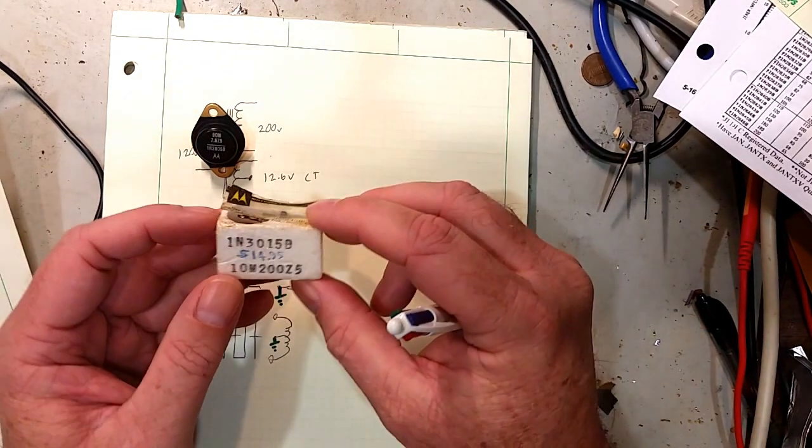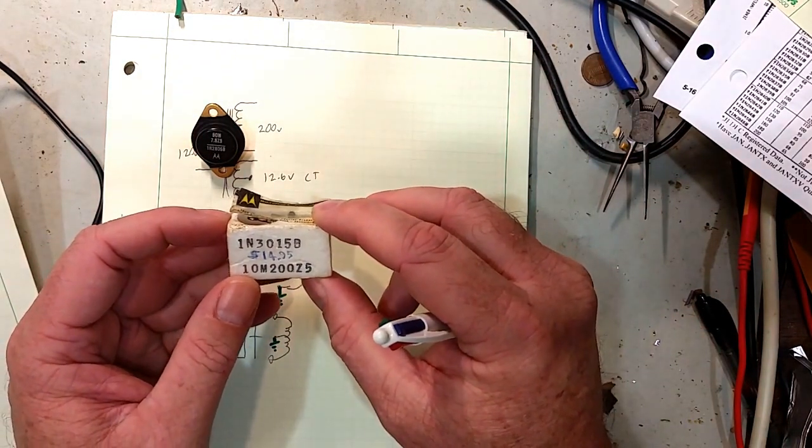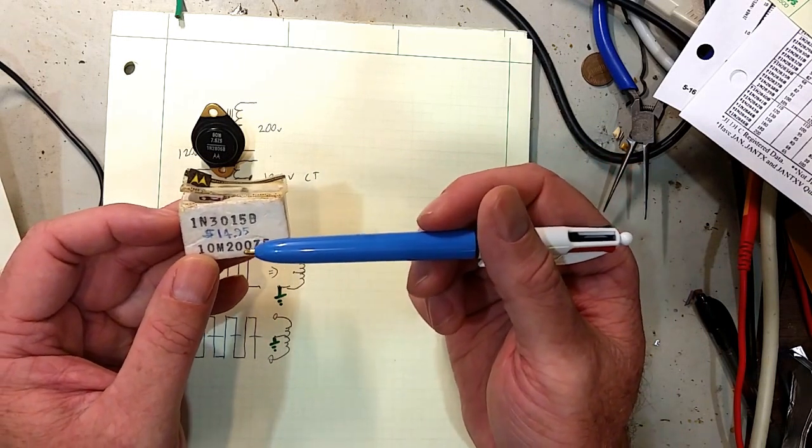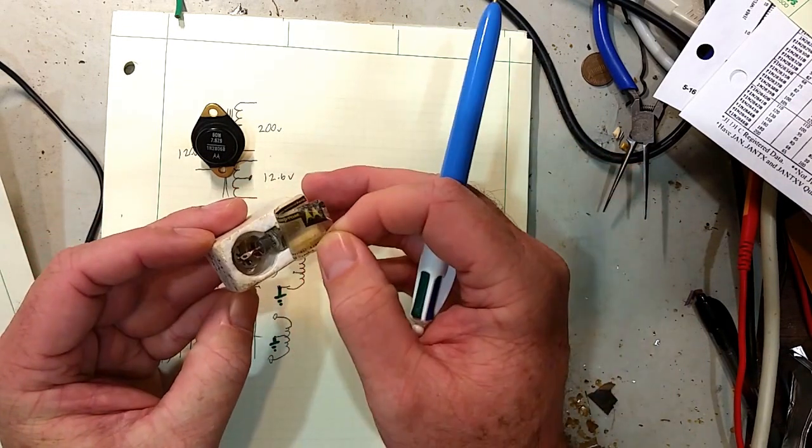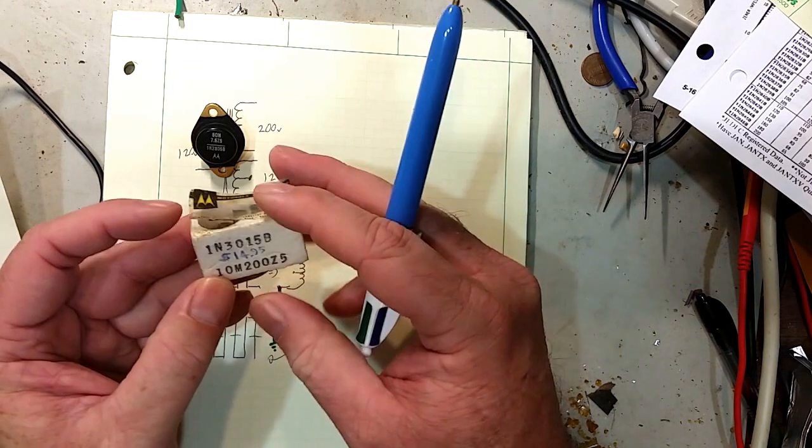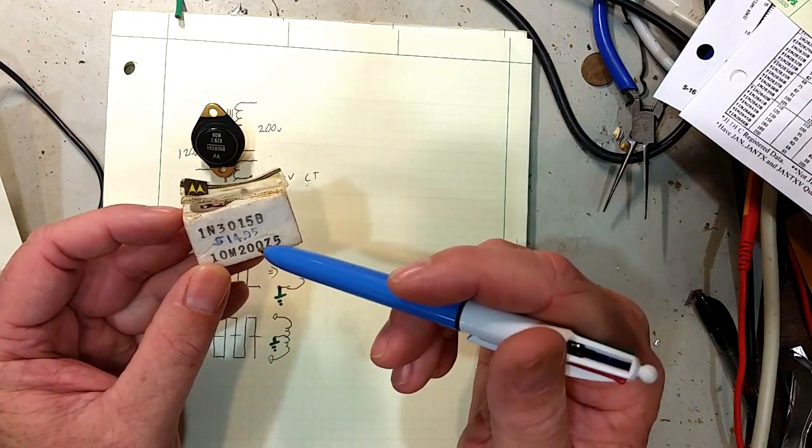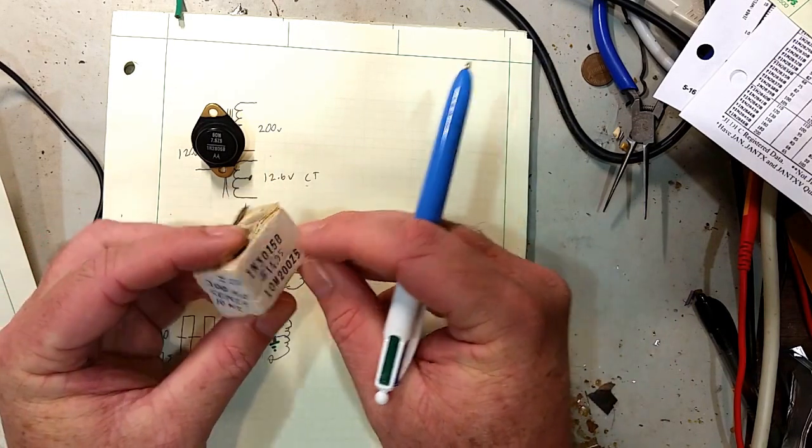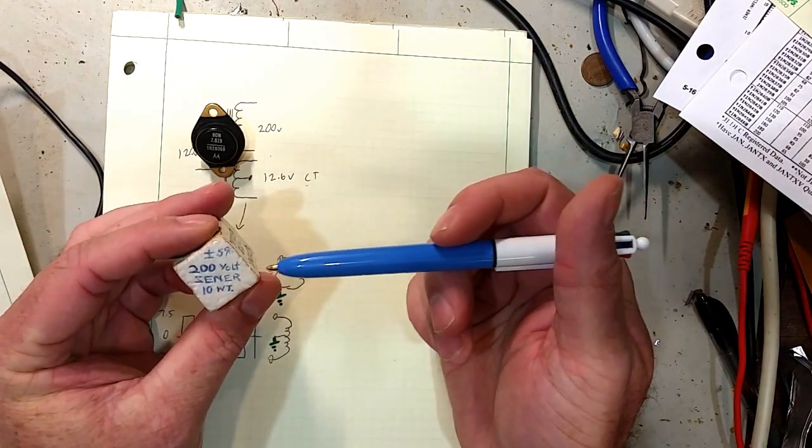Zener's, a couple other just quick facts on them. I did find going through the same junk box an accumulation of parts that I got that this came in. There was also this one. This is a stud mounted diode, 1N3015B. Somebody tried to sell it for $15 at one point.